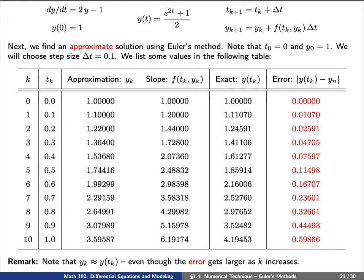We can continue this way in this fashion to see that we have a list of the t sub k's and y sub k's and we have a list of the exact values y of t of k. Let's take a look at what's called the error.